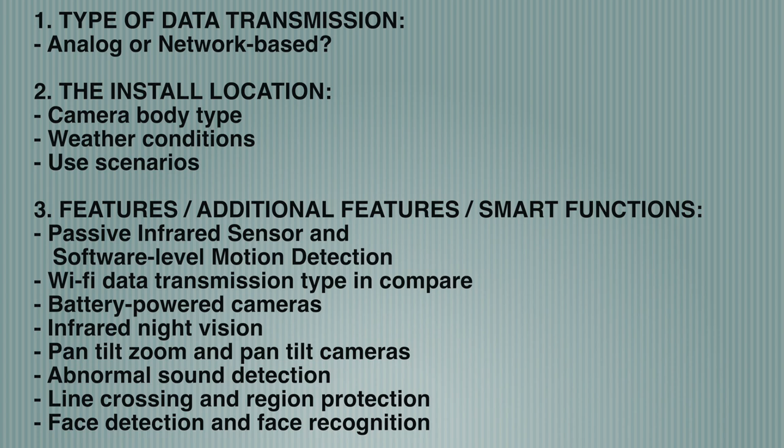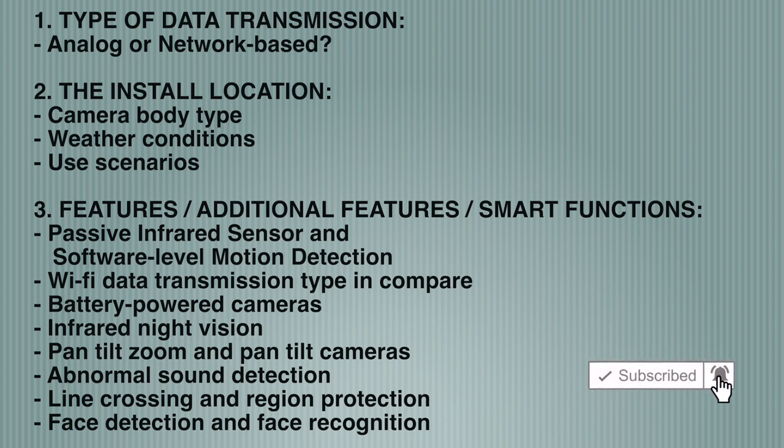Number three is about features — additional features and smart functions, such as a camera's passive infrared sensor and software-level motion detection, Wi-Fi data transmission type, income pair, battery-powered cameras, infrared night vision, pan-tilt-zoom and pan-tilt cameras, abnormal sound detection, line crossing, region protection, face detection, and face recognition. Do you need those?